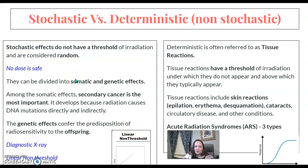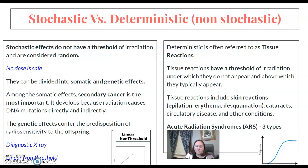Stochastic effects do not have a threshold and they're considered random — so no dose is safe, which is the concept of the linear non-threshold. They can be divided into somatic and genetic effects. Among the somatic effects, secondary cancer is the most important; it develops because radiation causes DNA mutations directly and indirectly. The genetic effects involve the offspring. Diagnostic x-ray falls under stochastic and the linear non-threshold response.